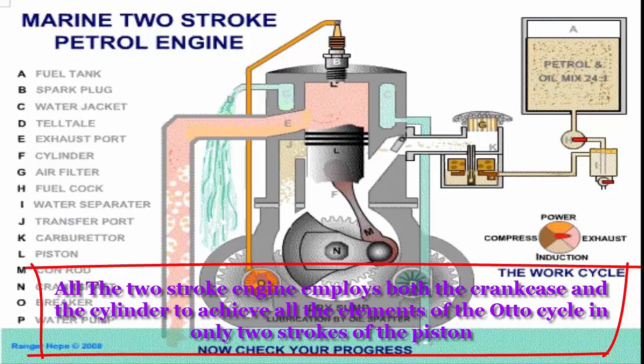The two-stroke engine employs both the crankcase and the cylinder to achieve all the elements of the Otto cycle in only two strokes of the piston.